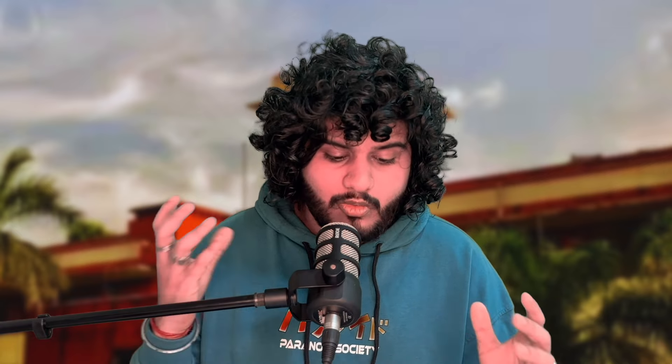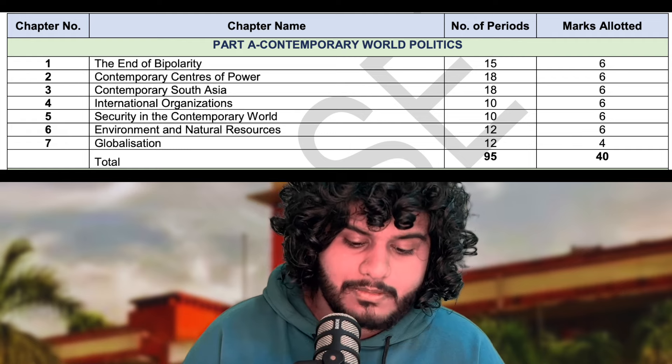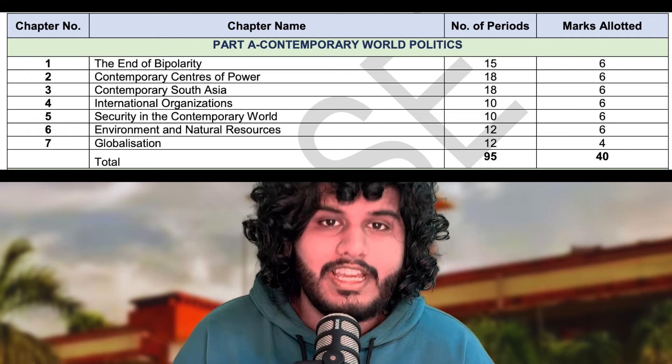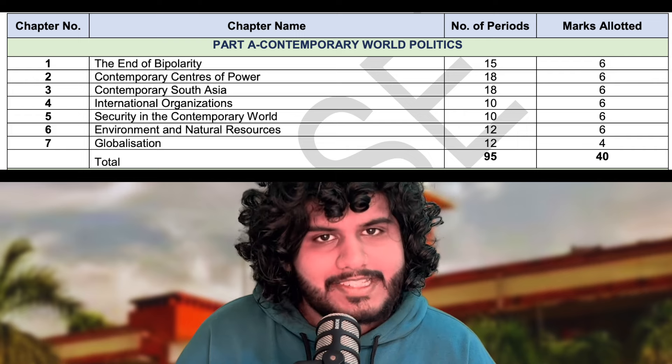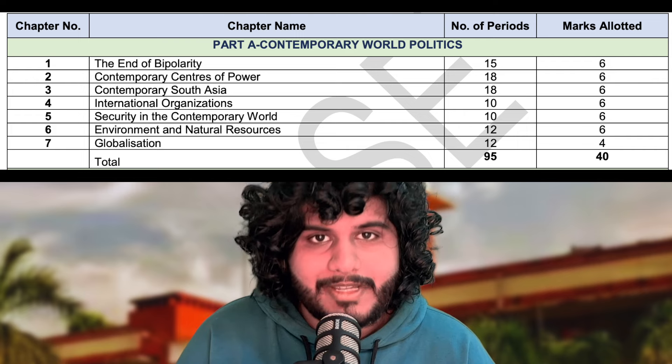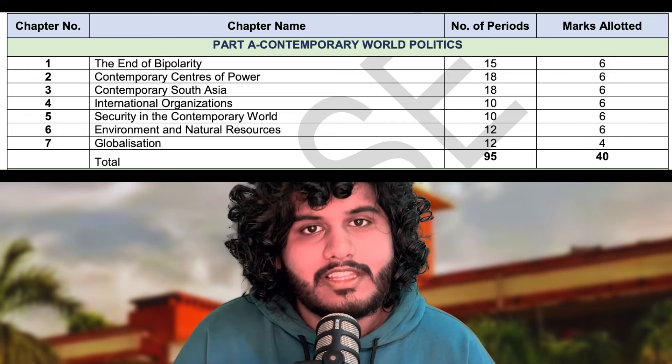A little prerequisite knowledge before the strategy: all chapters of Book 1 are equally important, and 6-mark questions can be asked from any chapter apart from Globalization. If you look at the syllabus, all chapters in the Contemporary World Politics Reader — your first book — are worth 6 marks except Globalization, which is 4 marks. So long-format questions can be asked from any chapter.